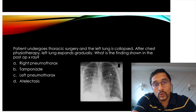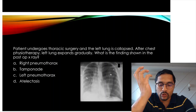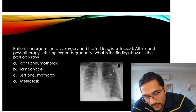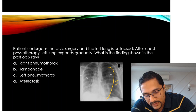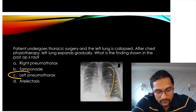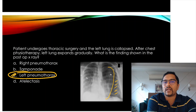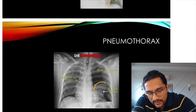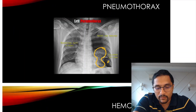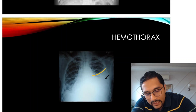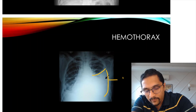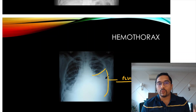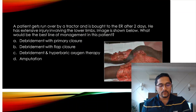A patient undergoes thoracic surgery and the left lung is collapsed — pneumothorax. After chest physiotherapy, the lung expands but not fully — this area still shows pneumothorax on X-ray with absent lung markings. In hemothorax, you will see an air-fluid level. If blood is present it is called hemothorax.